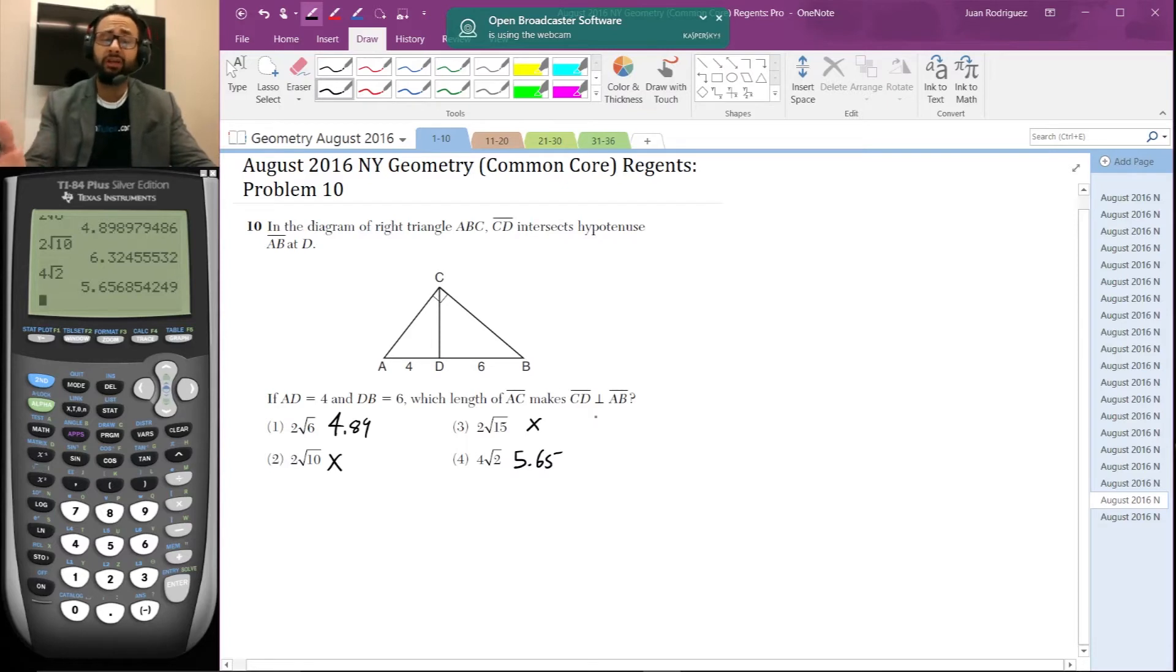But this is a good thing because honestly, now you have a 50% chance of getting it right, even if you don't know how to get this question right in a more definitive way. So let's see if we can get this problem right though. For right now, we have that AD is four, CD is unknown. Now I do notice there's a theorem that you should know that if this triangle ABC is a right triangle and CD is an altitude,